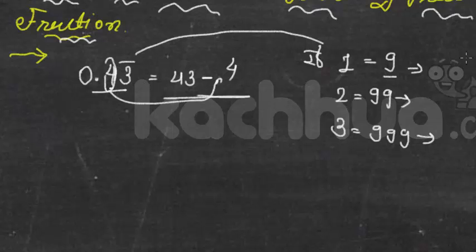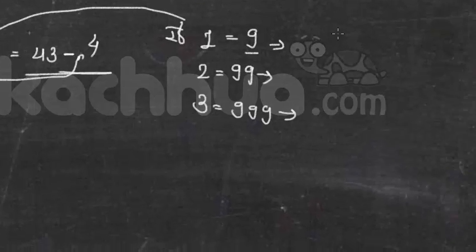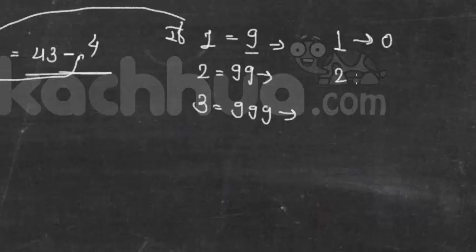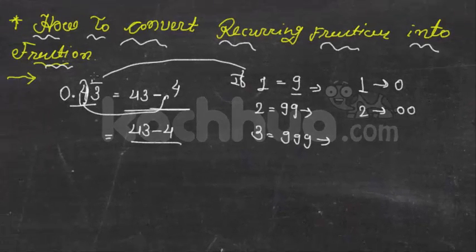Two have not bar, then put double 0 in denominator. So here 43 minus 4 upon. Here one number has bar so put 9, and one number have not bar so 10. Is equal to 39 upon 90.